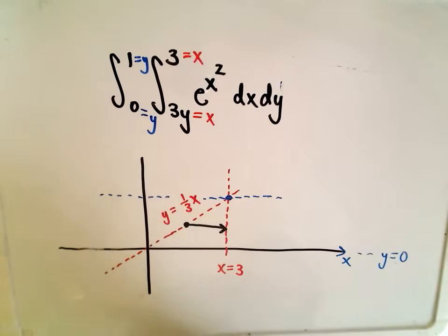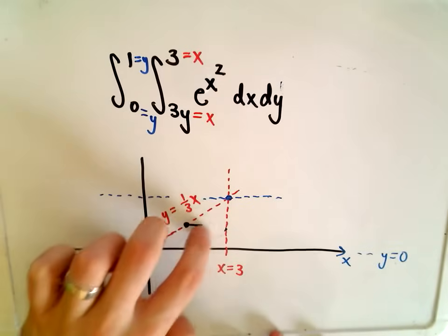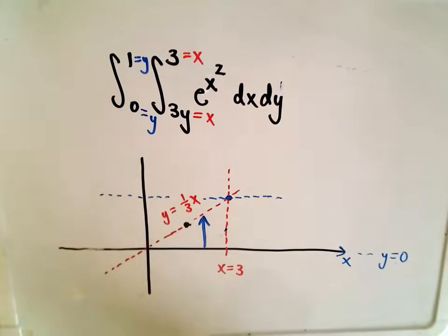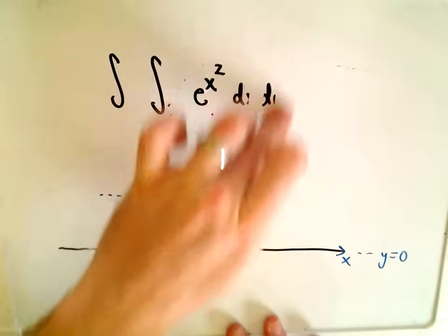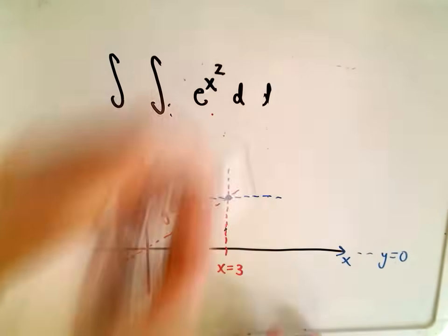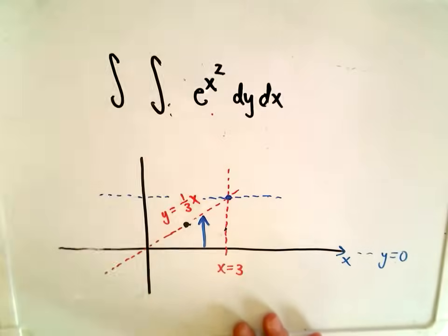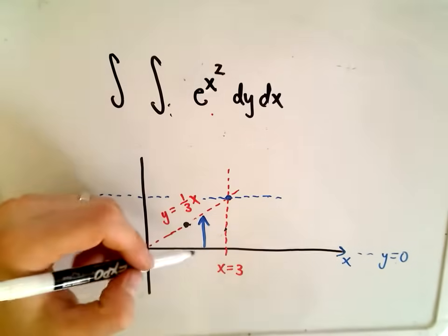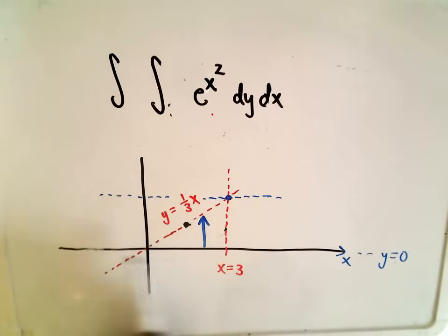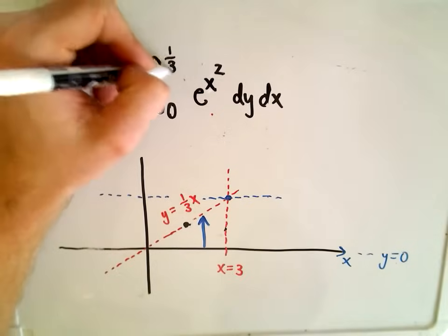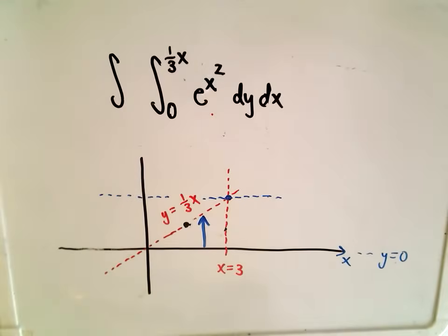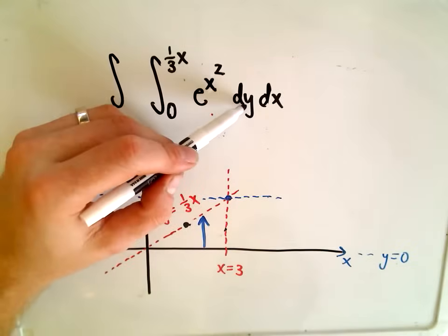Okay, so now instead of integrating with respect to x, we're going to switch it out and integrate with respect to y. So things are going to change a little bit. So I want to make it dy first, and then dx afterwards. Okay, so if I integrate with respect to y, the bottom curve you would be hitting would be the line y equals 0. So that will be our lower limit of integration. Then the top curve that I would be hitting would be the line y equals one-third x. And remember, you want to express it in terms of the other variable. So we're expressing the y limits of integration in terms of x.